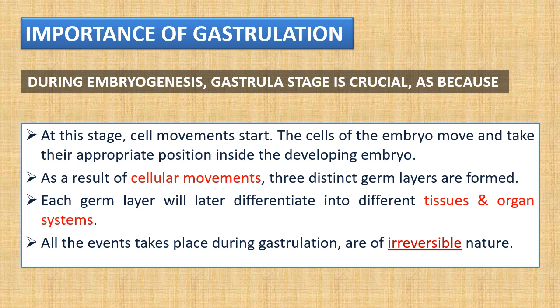During embryogenesis, the gastrula stage is crucial because at this stage cell movements start. The cells of the embryo move and take their appropriate position inside the developing embryo. As a result of cell movements, three distinct germ layers are formed. Each germ layer will later differentiate into different tissues and organ systems. All these events that take place during gastrulation are of irreversible nature.